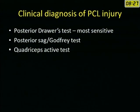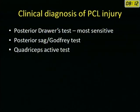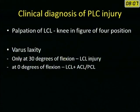To diagnose PCL injury, the posterior drawer test is the most sensitive. But before performing it, we have to identify the posterior sag. If one fails to identify the posterior sag, the posterior drawer test can be confused with the anterior drawer test. The quadriceps active test is also important for diagnosis.